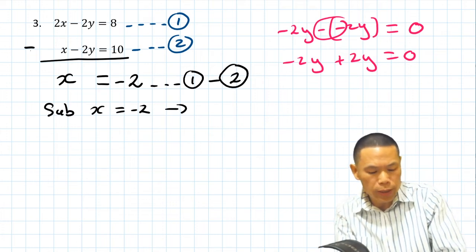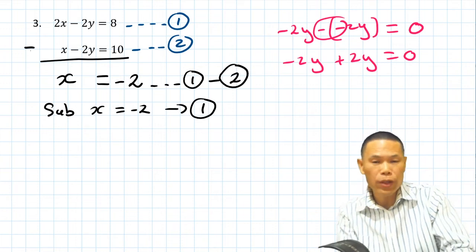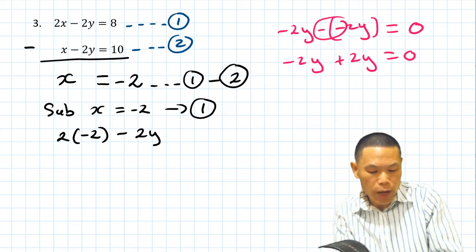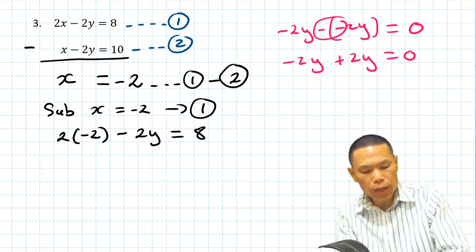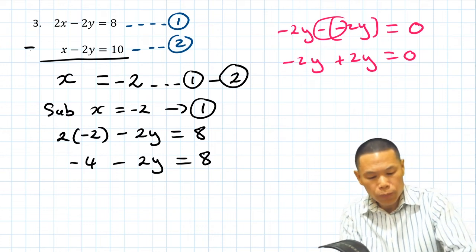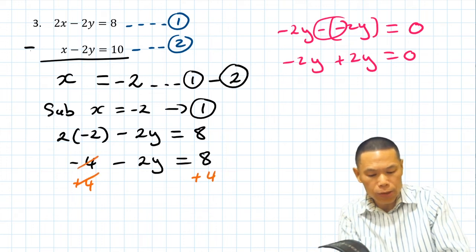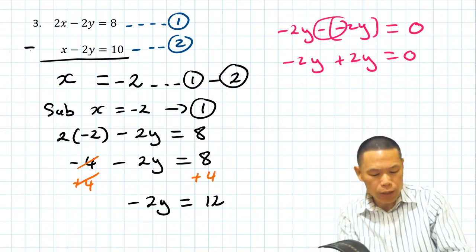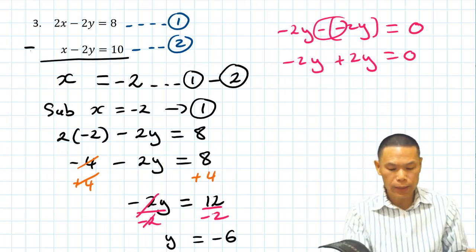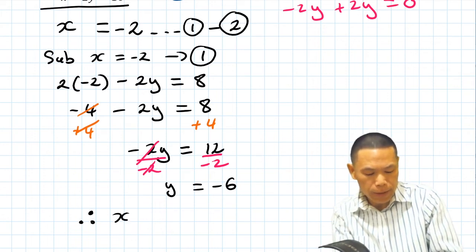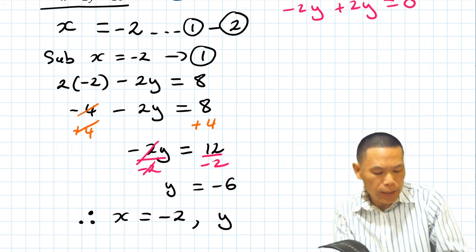Now we substitute x equals negative 2 into equation number one. We get 2 lots of negative 2, minus 2y, equals 8. Two times negative 2 is negative 4, so negative 4 minus 2y equals 8. We plus 4 on both sides, giving negative 2y equals 12. Dividing both sides by negative 2, y equals negative 6. Therefore x is equal to negative 2 and y is equal to negative 6.